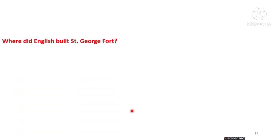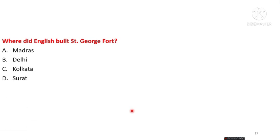The next question is: where did the English build Saint George Fort? The options are Madras, Delhi, Kolkata, and Surat. The answer is option A — the English built Saint George Fort in Madras.